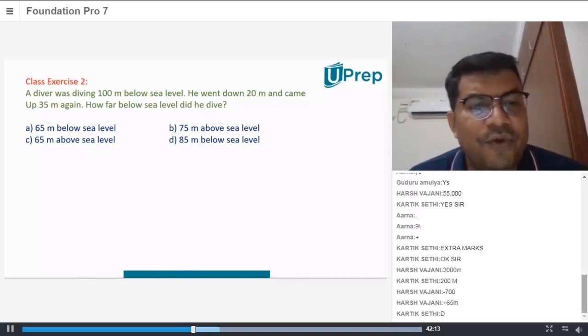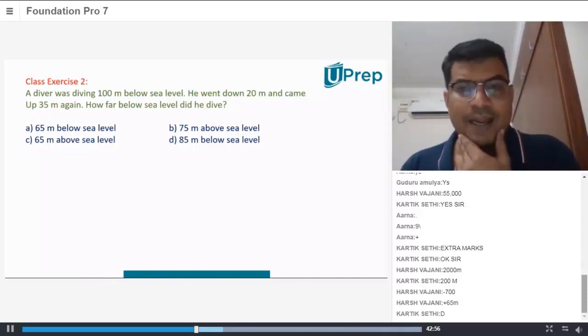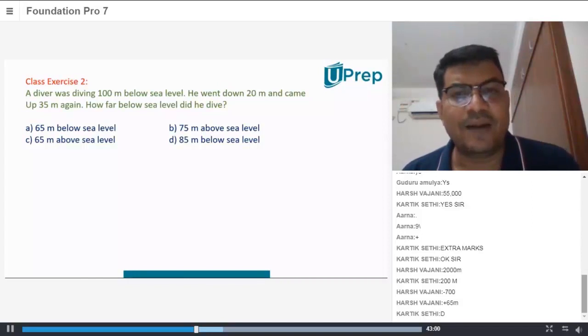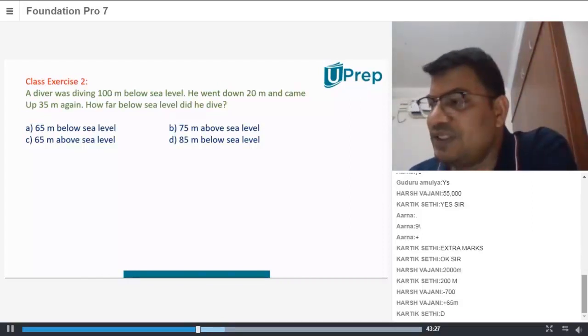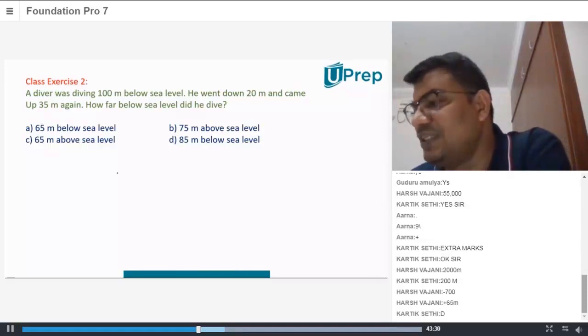How do you solve this? A diver was diving 100 meters below sea level. Someone was diving 100 meters below sea level, that means if the sea level we assume it as zero.